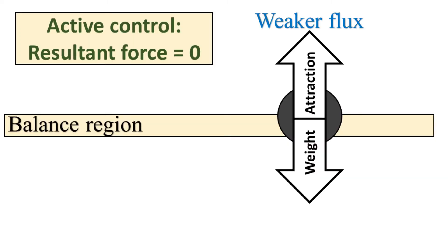When the globe goes above this balance point, magnetic flux in the upper part is reduced, also reducing the attraction force.